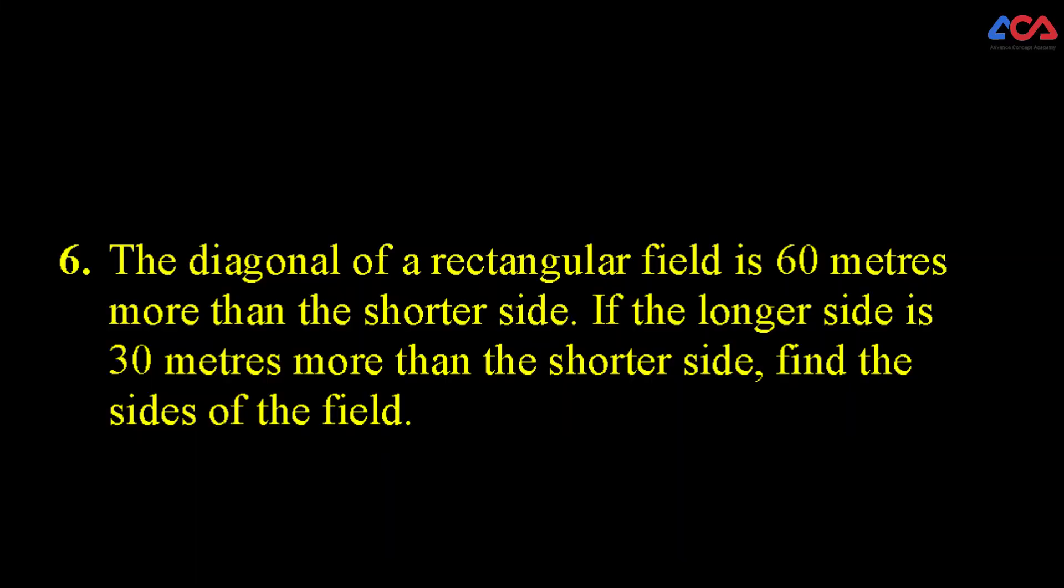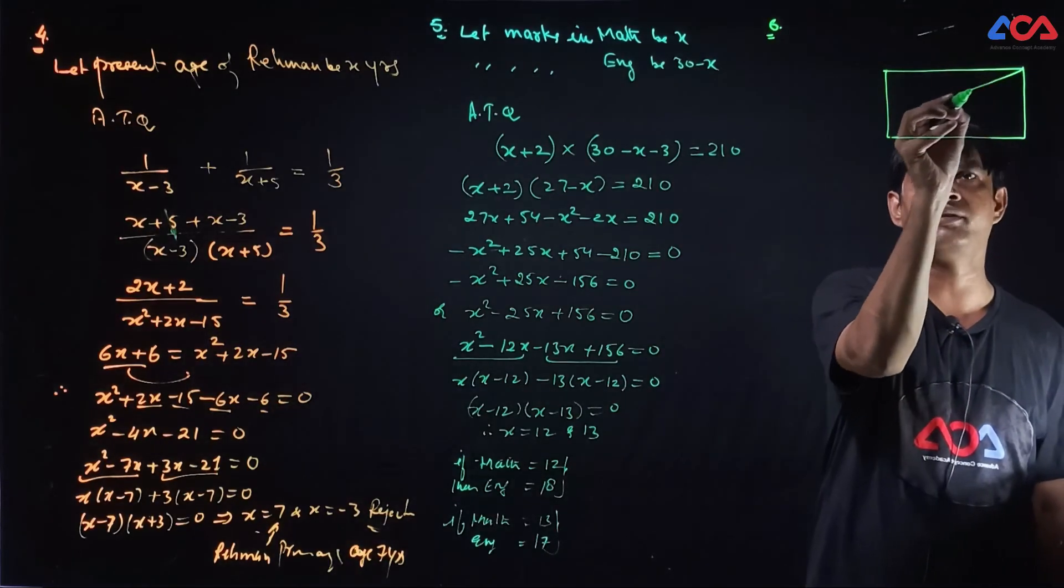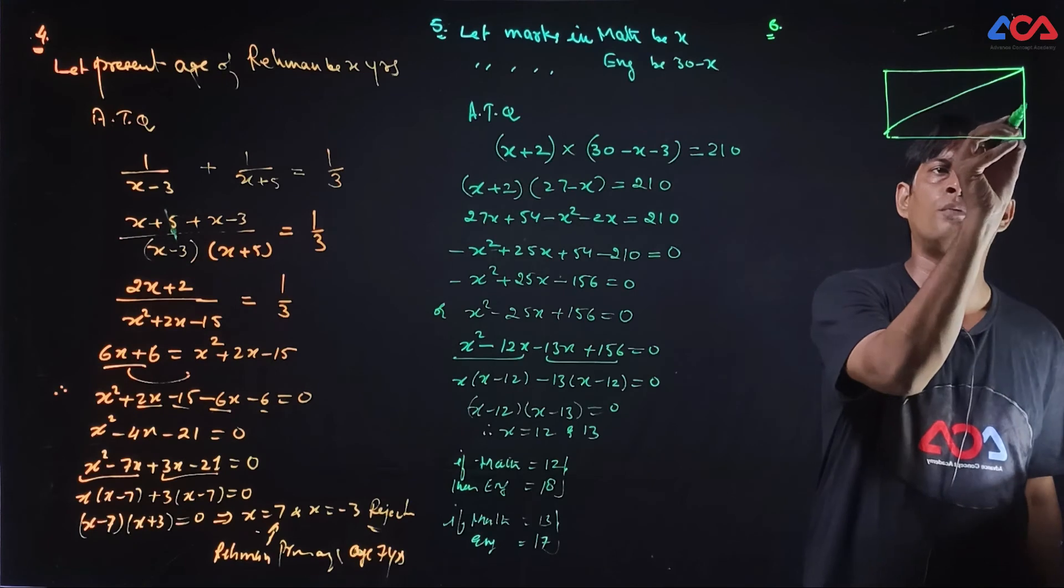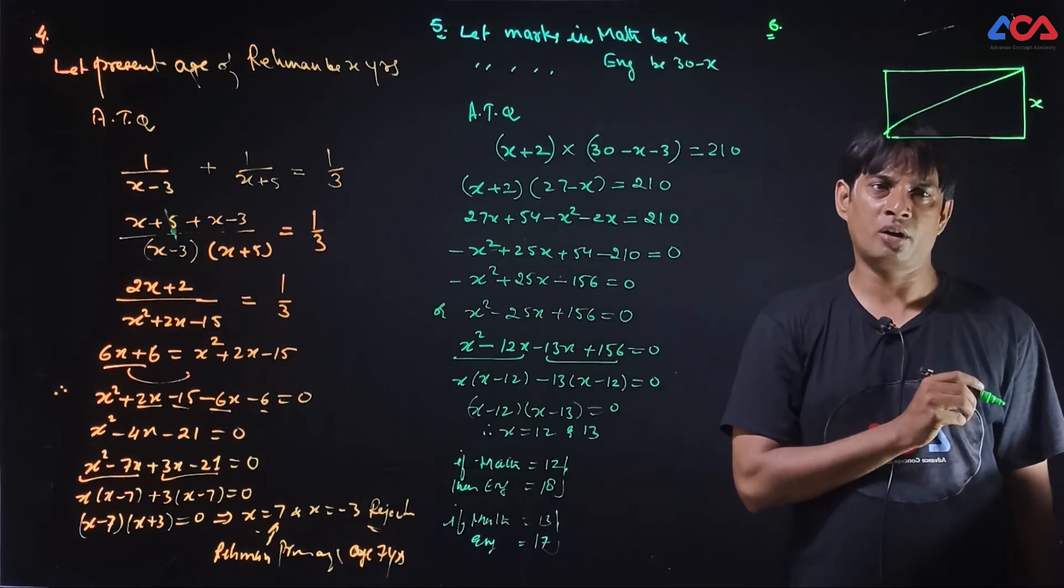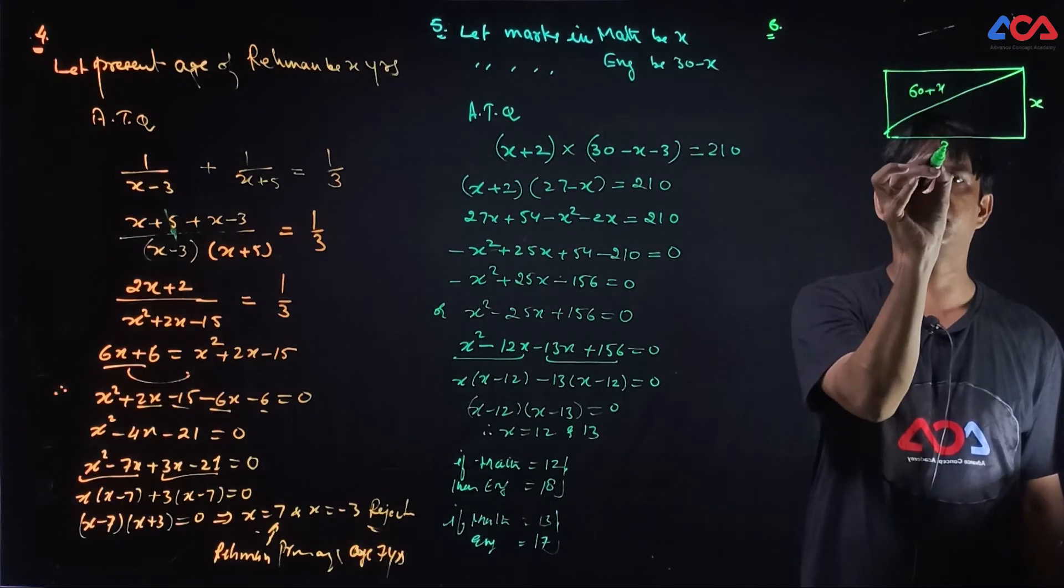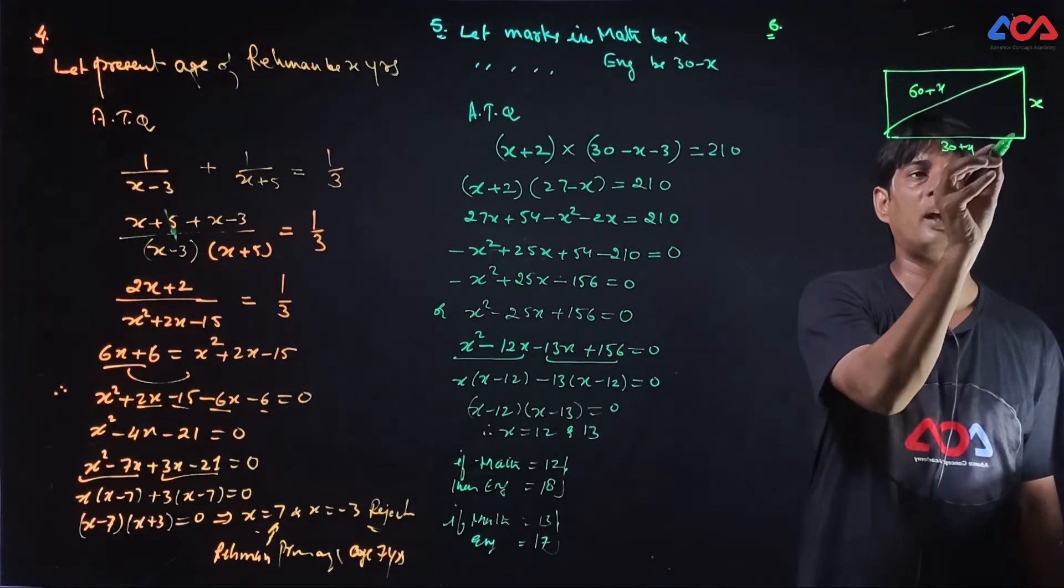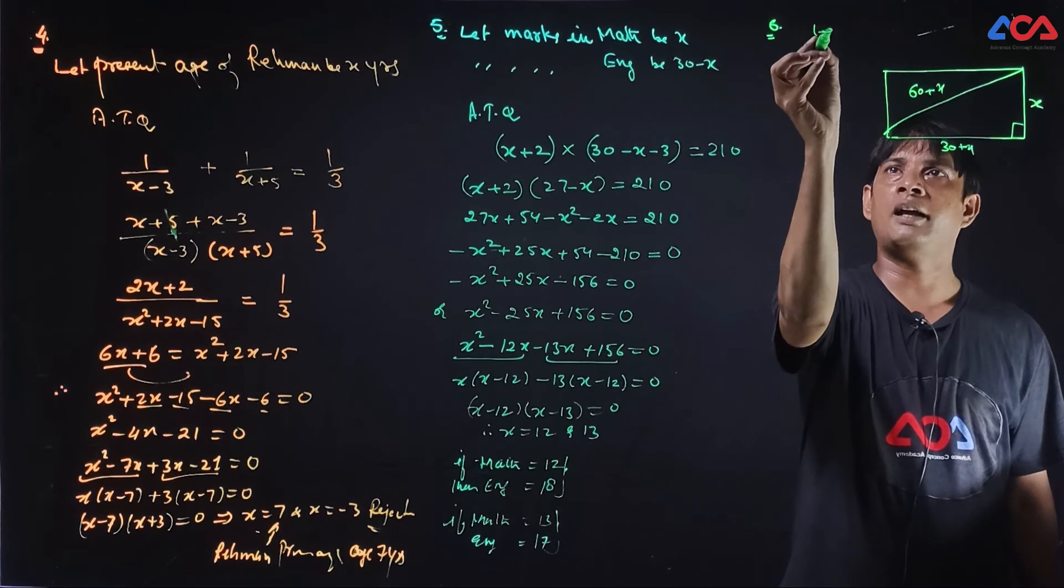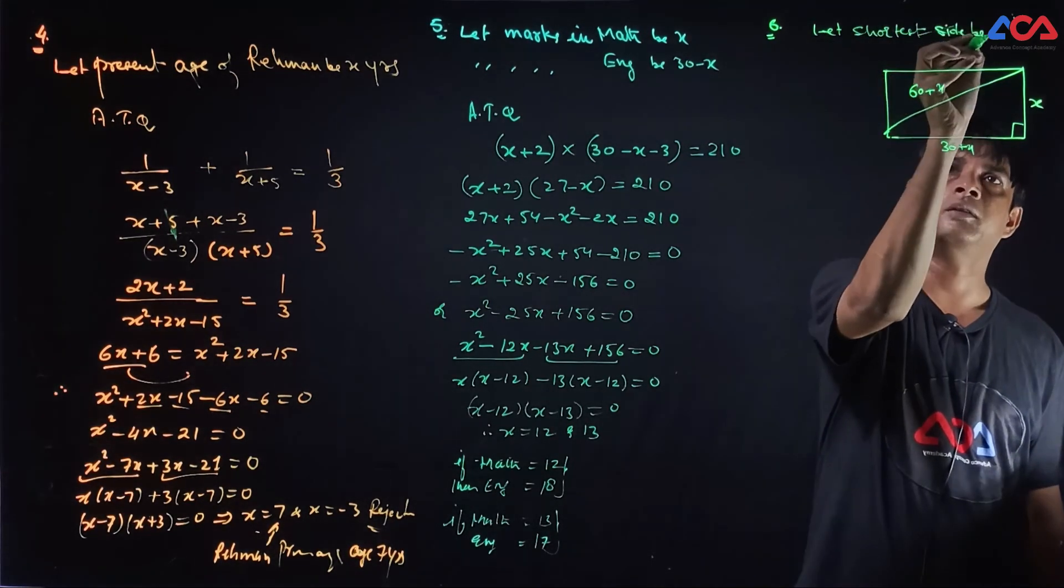Let's read it. The diagonal of the rectangular field is 60 meters more than its shortest side. If the longer side is 30 meters more than the shortest side, find the side of the field. A rectangular field, suppose it is a rectangular field. Its shortest side, its diagonal length is 60. Longest side is 30. It is 60 plus x. It is 30 plus x. So the dimension is asking. It is a rectangular field. It is a right triangle.